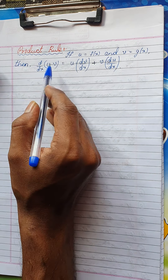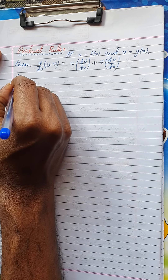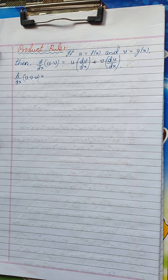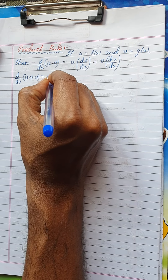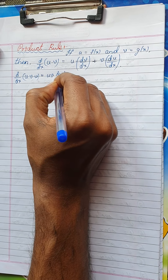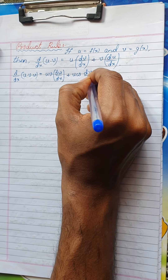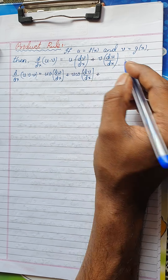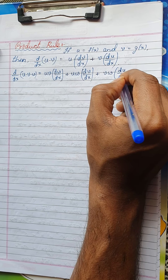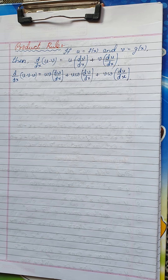You might be wondering about the product of more than two functions. If you have the derivative of u·v·w, with three functions, keep two functions as it is — for example, keep u and v as it is and differentiate w with respect to x — plus keep u and w as it is and differentiate v. It is as simple as this.